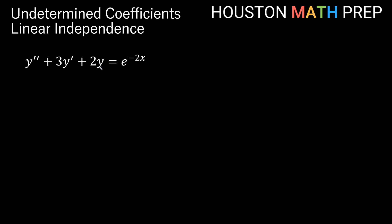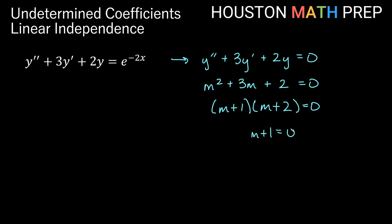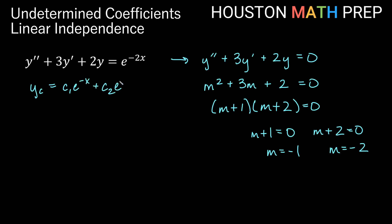Let's take a look at an example. We have y double prime plus 3y prime plus 2y equal to e to the negative 2x. First, we solve the associated homogeneous equation y double prime plus 3y prime plus 2y equals 0. Using the characteristic polynomial, m squared plus 3m plus 2 equals 0, which factors as m plus 1 times m plus 2 equals 0, giving us m equals negative 1 and negative 2. Our complementary function is c1 e to the negative x plus c2 e to the negative 2x.